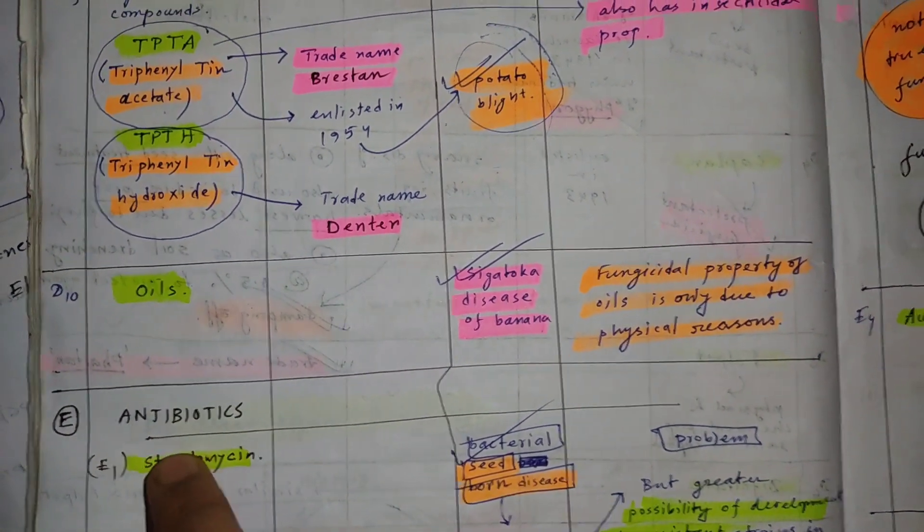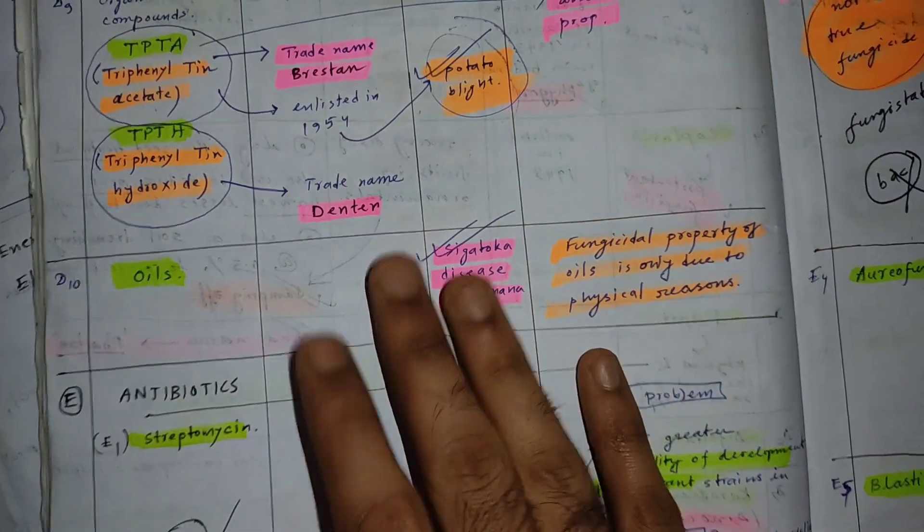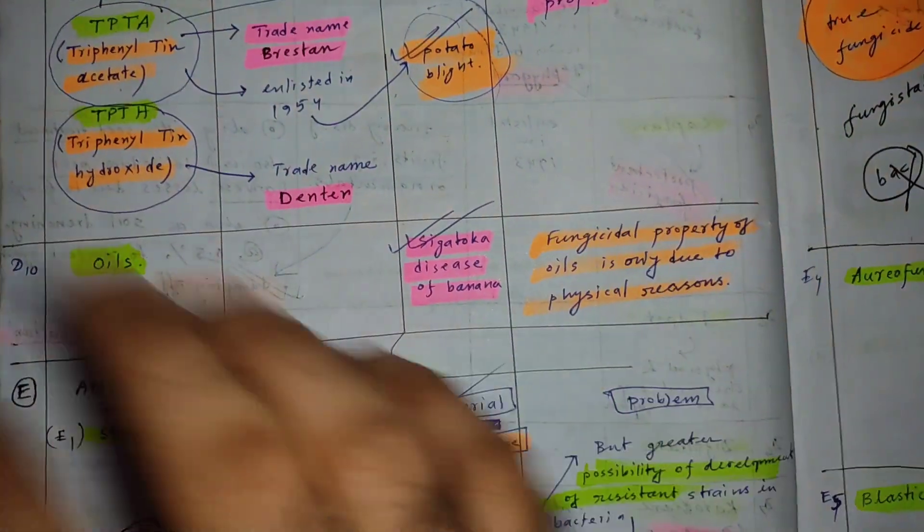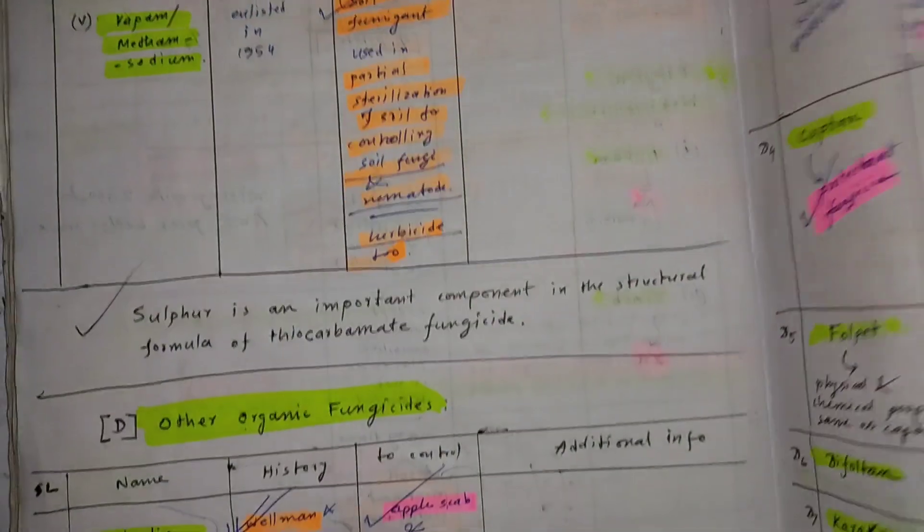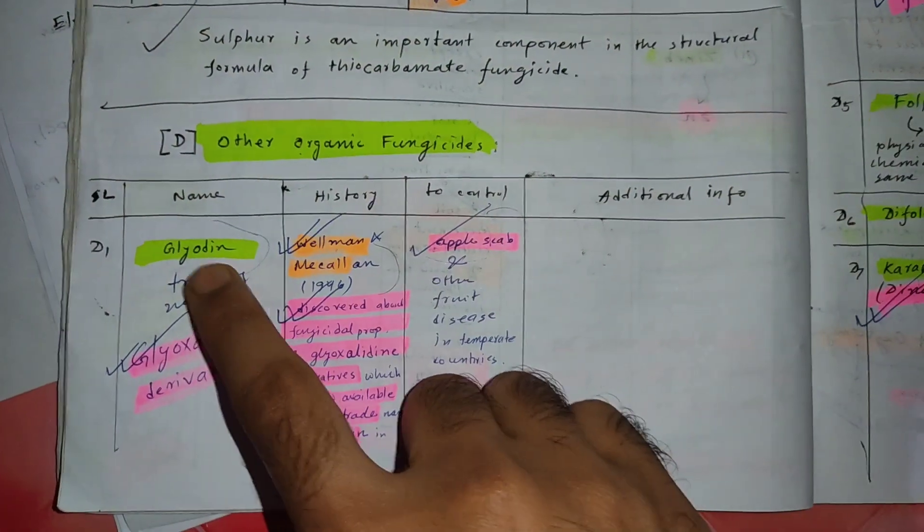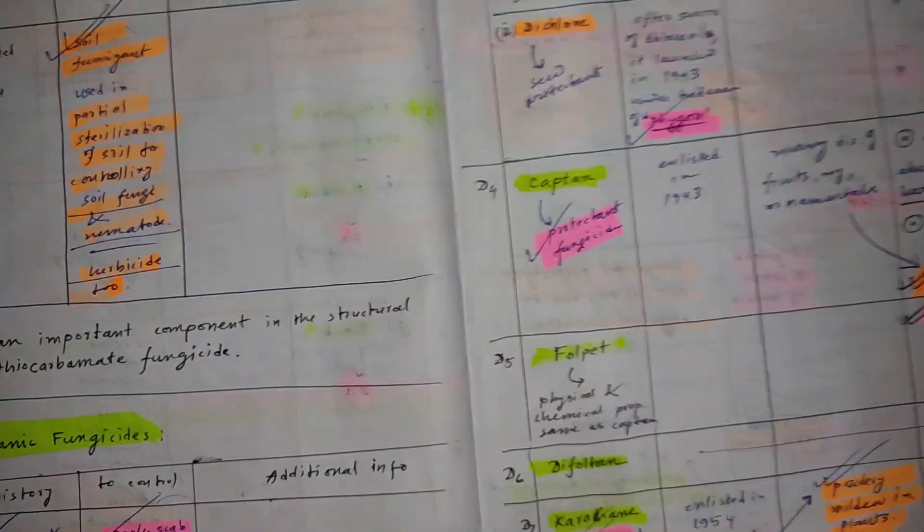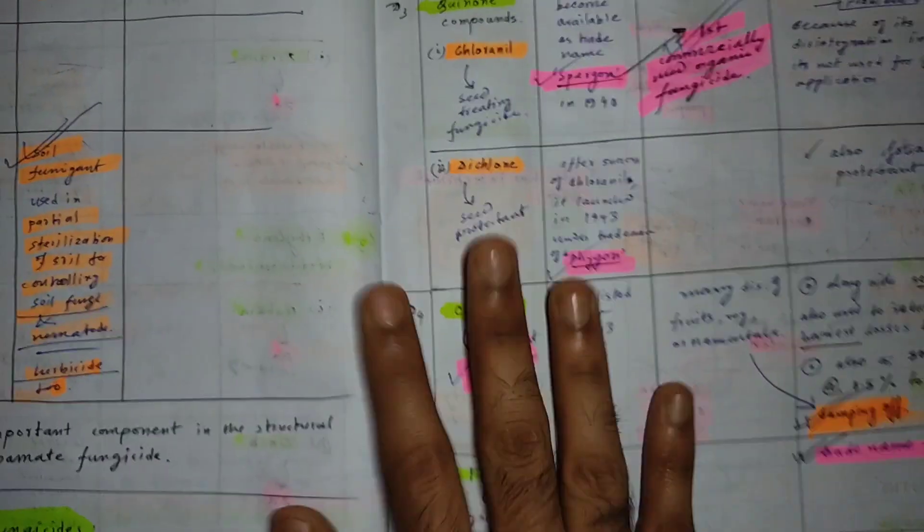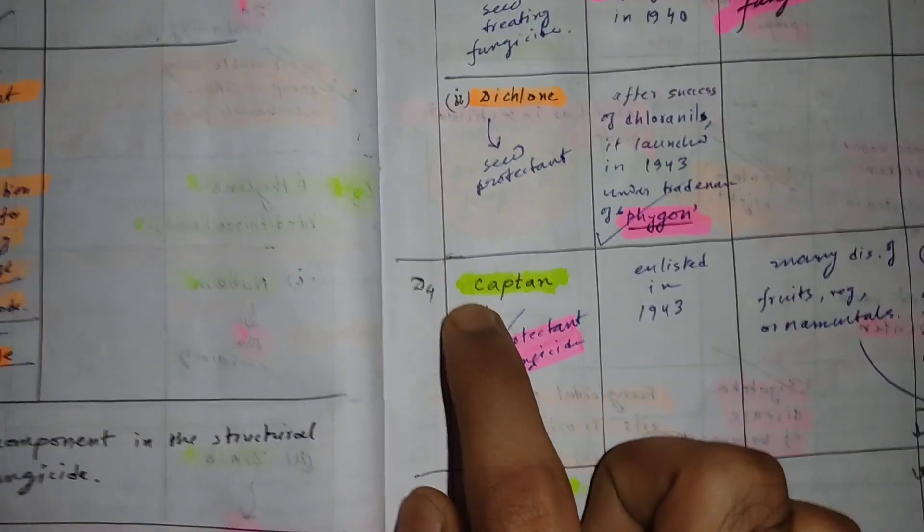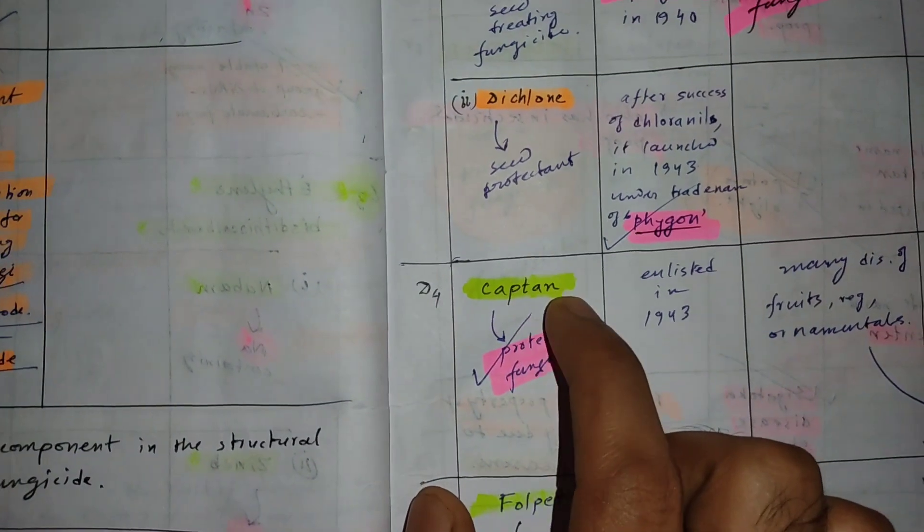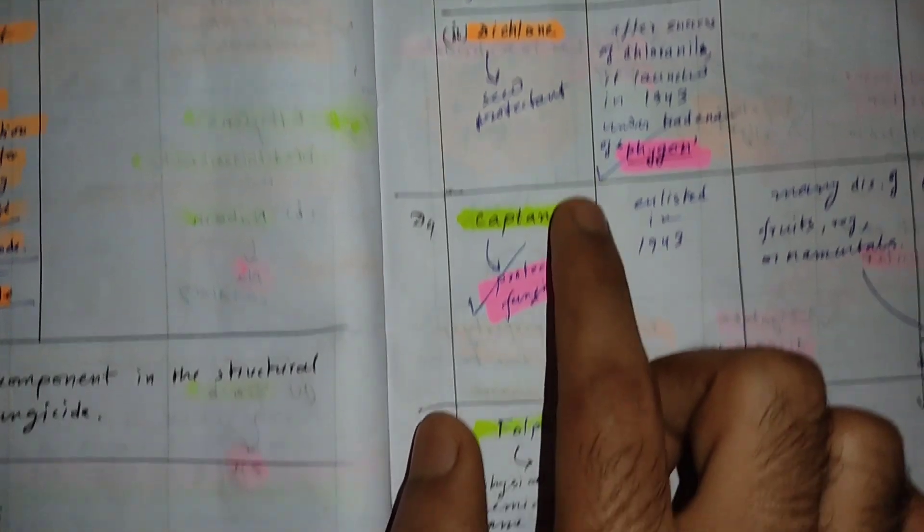There is one important point: how can you remember all these names? How can we remember glyodin, dodine, quinone, and captan—all these kinds of names? Actually, make a story of them and you can easily remember.